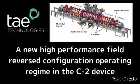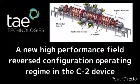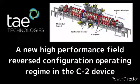Partial line-tying to the gun anode suppresses the N=1 mode. Partial line-tying of the N=1 mode requires sufficiently low shell resistances.